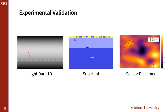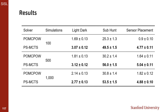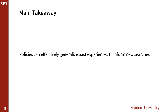Using this policy space similarity method, we conducted experiments in three different partially observable problems: a light dark problem where we guide an agent to find a difficult-to-observe area of a 1D space, a sub hunt environment where our agent hunts down and destroys an enemy submarine, and a sensor placement problem where we sequentially install radio towers in a noisy RF domain to maximize useful information gathered. Comparing PSMCTS to POMCPOW for 100, 500, and 1,000 simulations per search, PSMCTS outperformed POMCPOW for any given number of simulations. The main takeaway is that there are other ways to use offline learned policies to guide online Monte Carlo tree search—in this case, by helping us generalize from past experiences.